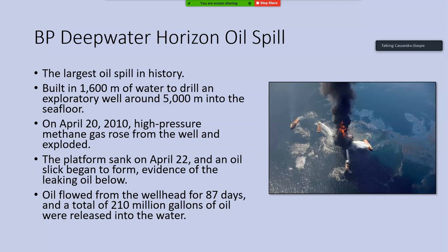The reason for the spill was actually an explosion. On April 20, 2010, a high-pressure bubble of methane gas rose from the well and exploded when it reached the platform surface. A couple of days after rescue crews arrived to put out the fire, the platform sank due to the damage of the explosion. Almost immediately after it began to sink, an oil slick started to form at the surface, evidence of oil leaking from below.